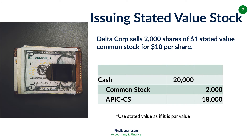What if there's such a thing as stated value? Sometimes they say there's no par value, but it has stated value. If it says stated value, you treat it just like par value. So you sell 2,000 shares of $1 stated value common stock for $10 per share — it's the same entry. Cash goes up $20,000. Common stock is at par, which is now called stated value. APIC is the remainder. So use stated value as if it's par value.